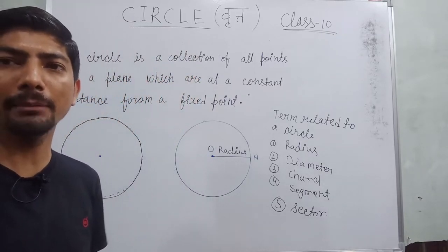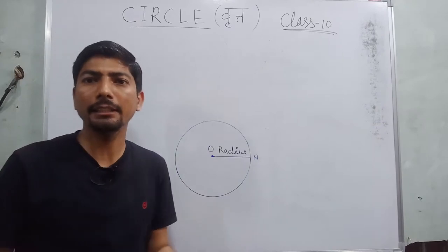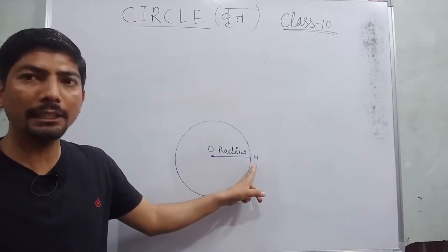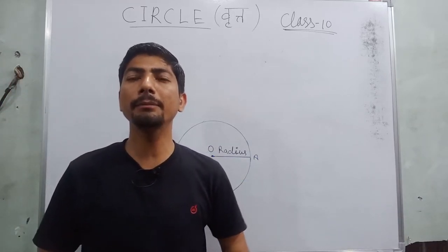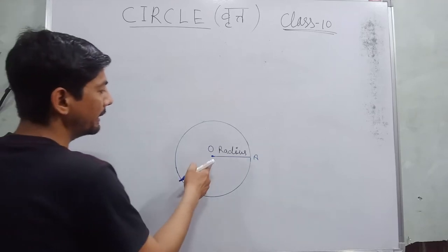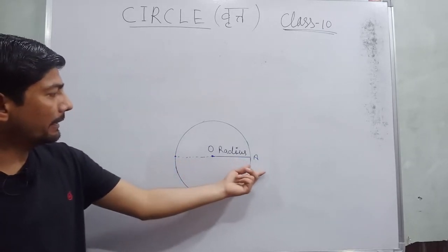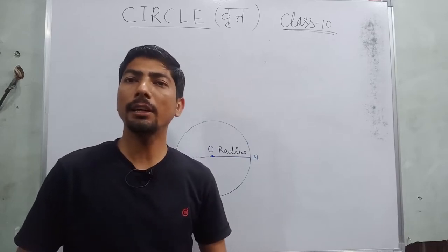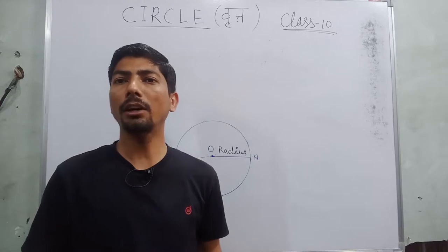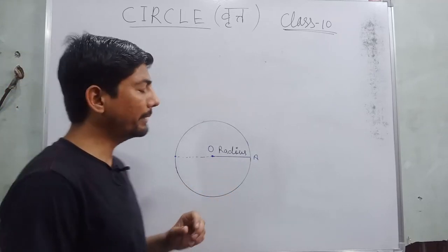Aap inhe write down kar lo ya screenshot le lo. So the first term is radius. If we extend the radius further — like this — toh yeh humari diameter ban jaati hai. Yaani ki the distance between any two points of a circle which passes through the center is called diameter. Diameter is the longest chord of a circle, jise Hindi mein 'jeeva' bolte hain. So sabse badi jeeva jo hogi woh diameter hogi. Ab baat aati hai — what is chord?